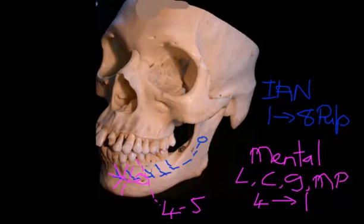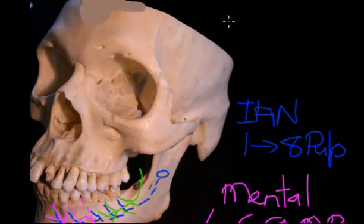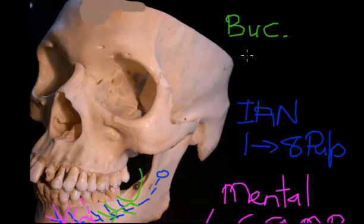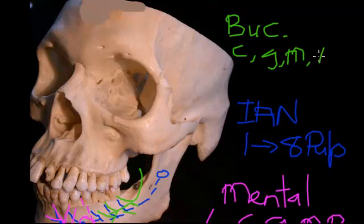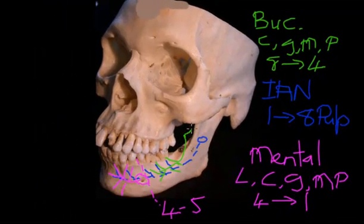The question left is: what supplies the buccal region around the fives and back to the eights? That's the buccal branch of the mandibular division of the trigeminal nerve. It runs across the retromolar pad and spreads out to supply that region. The buccal nerve is sensory to the cheek, the gingiva, the mucosa, and the periodontal ligament from around tooth eight back to around the mental foramen area — approximately tooth four or five. Importantly, the buccal nerve is separate from the inferior alveolar nerve.